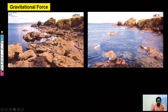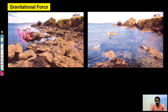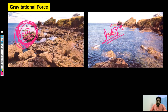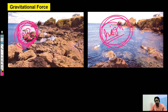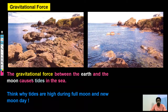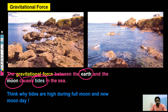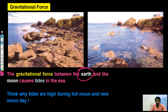Let's look at another example — you can see two pictures. In the first one, the water level is low; in the second one, the water level is high. The low water level situation is called low tide, and the high water level situation is called high tide. So the gravitational force between the earth and moon causes tides in the sea — this low tide and high tide situation comes because of the gravitational force acting between the earth and moon.